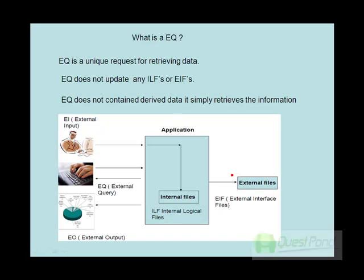EQ does not retrieve complex aggregated information. For example, if you have a customer screen showing a country drop-down box, then that country drop-down box is an EQ, because it does not aggregate information from multiple ILFs — it just goes to the country master table and retrieves the data. The three unique features of EQs are: it is a unique request for retrieving data, it does not update any ILFs or EIFs, it does not contain any derived data, and it simply retrieves data from a single table.